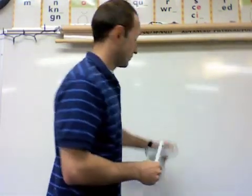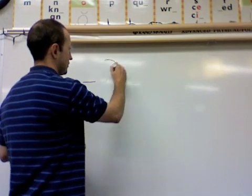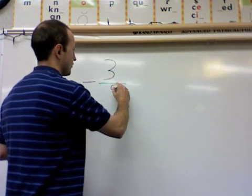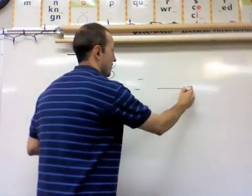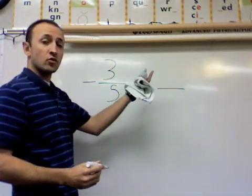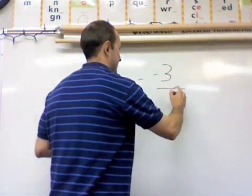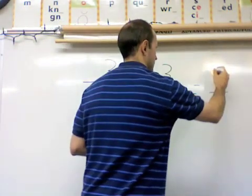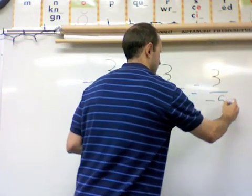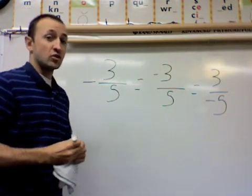But what if we have a number that's already a fraction? Let's say we have a negative 3 over 5. This can be made rational by rewriting it and making either the numerator or the denominator the negative integer. So I can do it this way, or I can also do it this way. Negative 3 over 5 or 3 over negative 5. Let's look at some more examples.